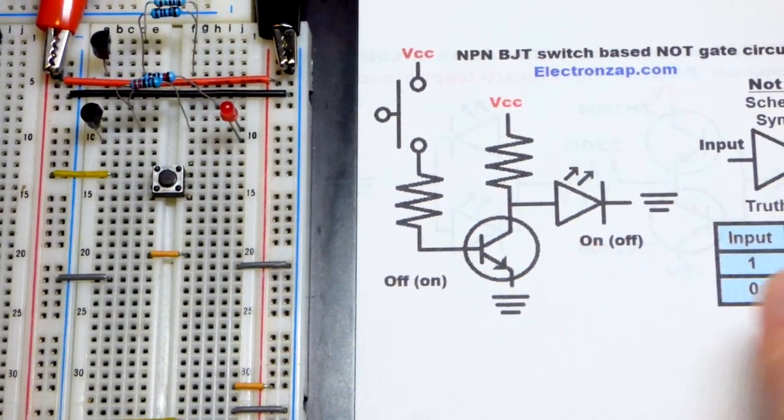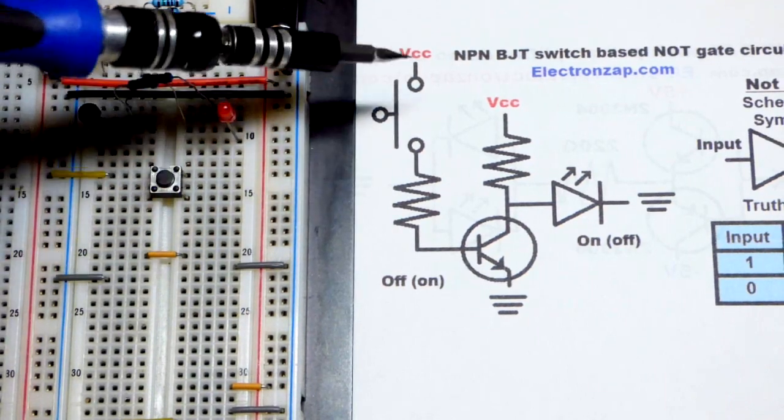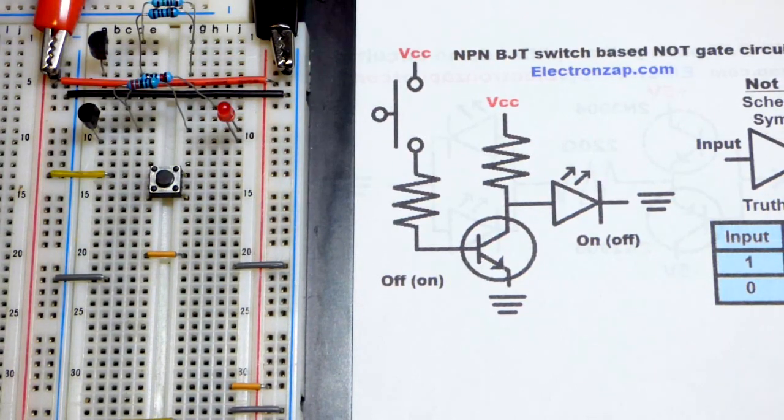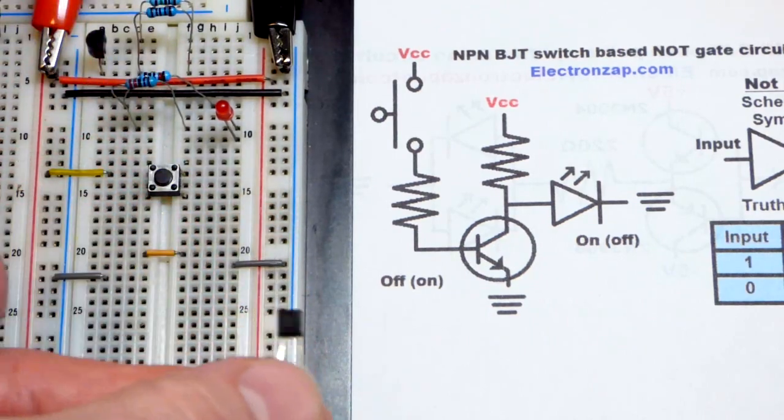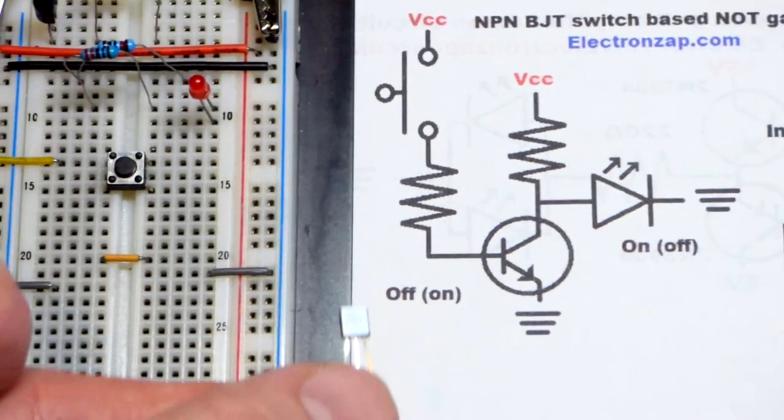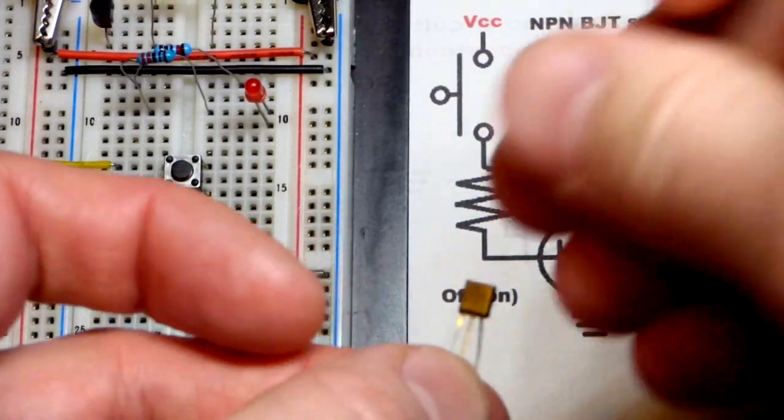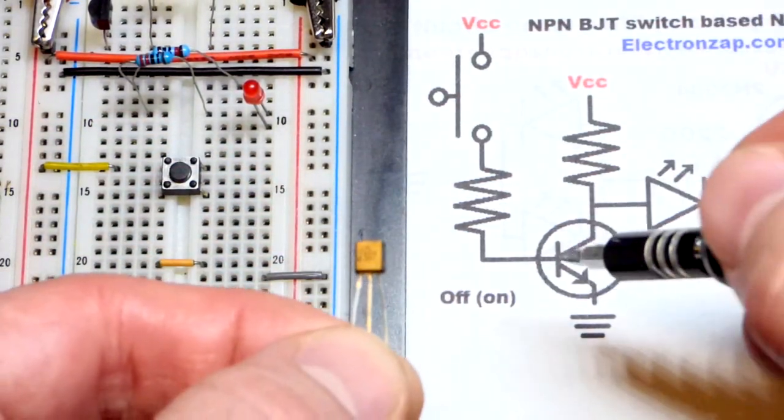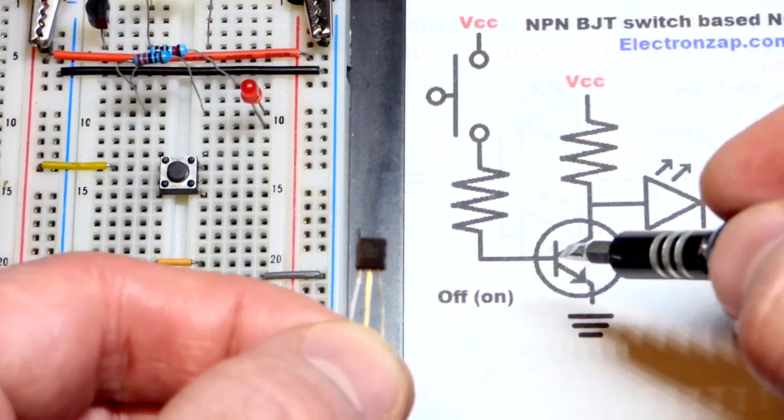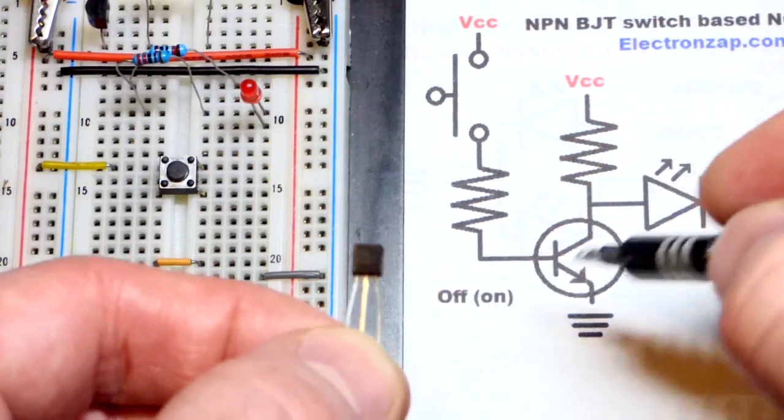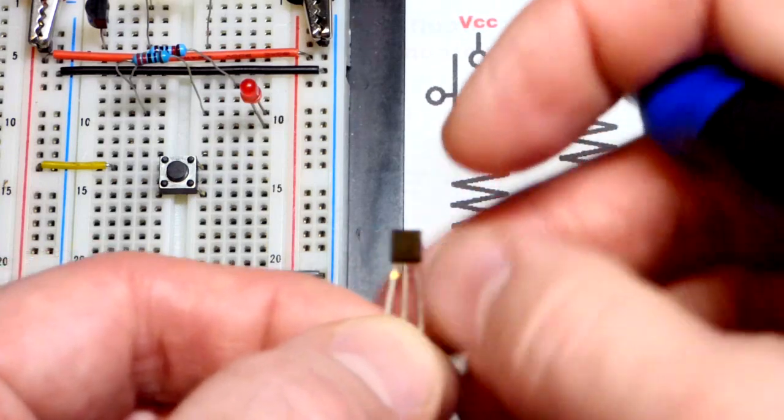I already have the switch on there. You can see it goes to the positive supply right there. We will grab the transistor here, so this is the 2N3904. And the left pin is the emitter, which is the arrow. Middle pin is the base, and then right pin is the collector. We're going to turn it that way.